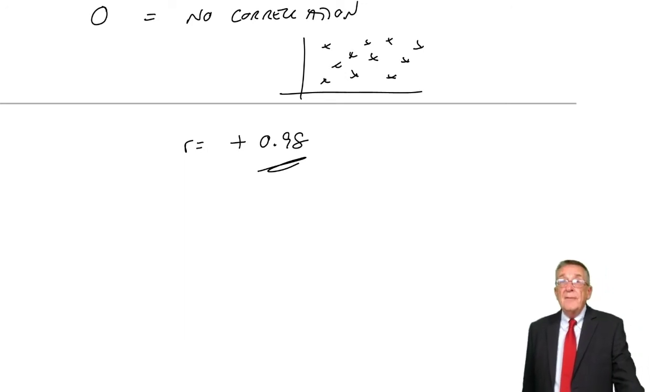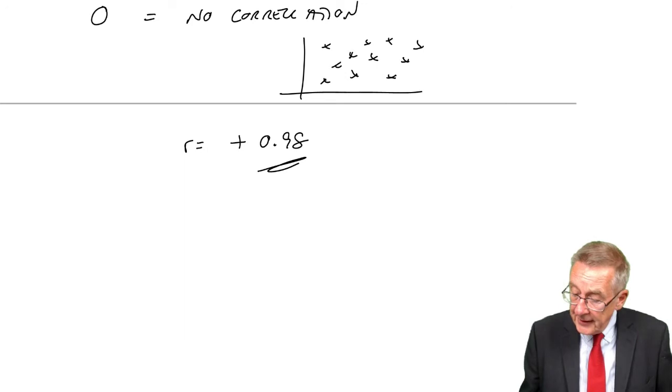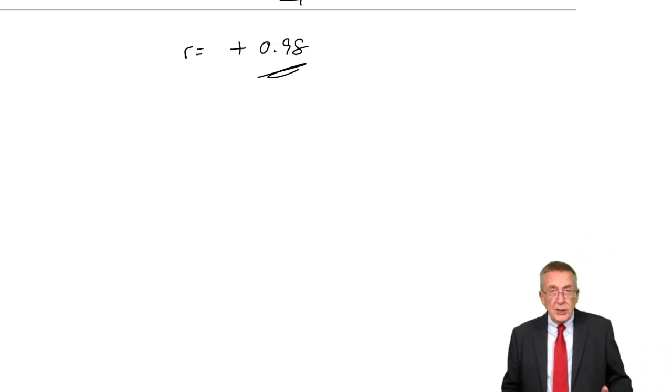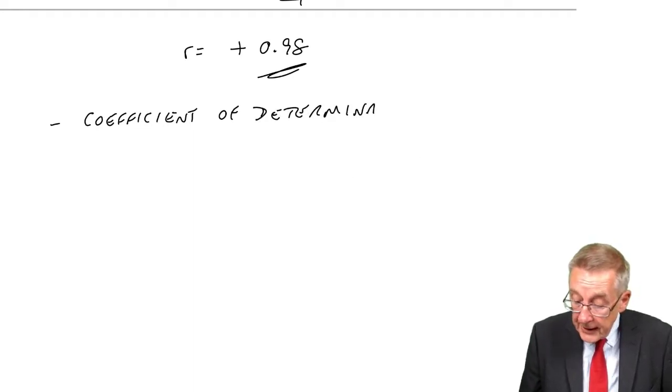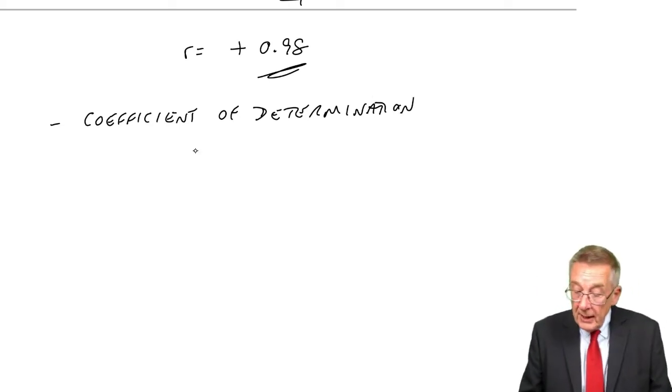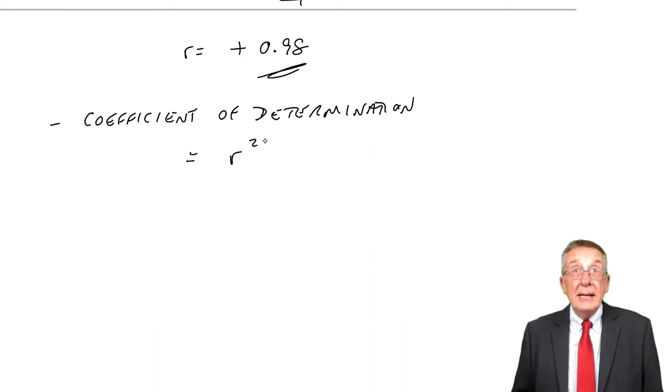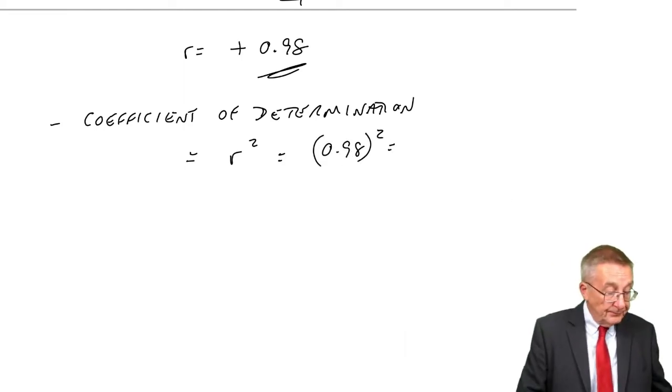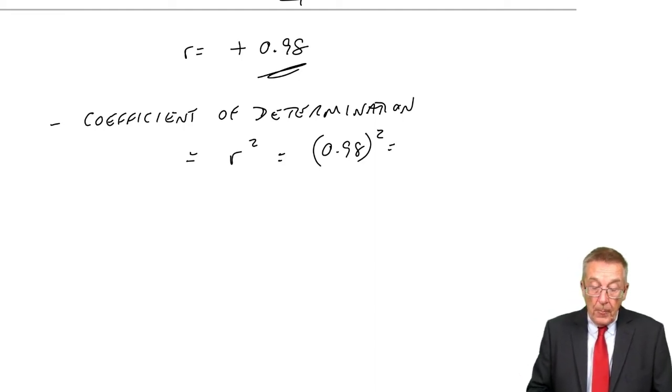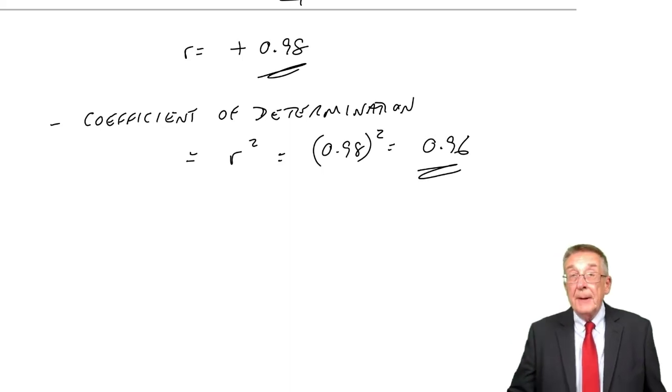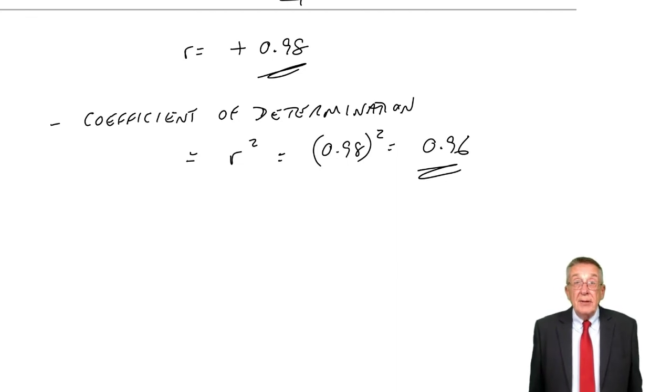Finally, one very minor thing. That is the correlation coefficient. There's something else called the coefficient of determination. You're not given a formula for this, but it's so easy to remember you don't need one. It's equal to the correlation coefficient squared. For our example, 0.98 squared comes to 0.96. This is always positive. If you square a negative number, it's still positive.